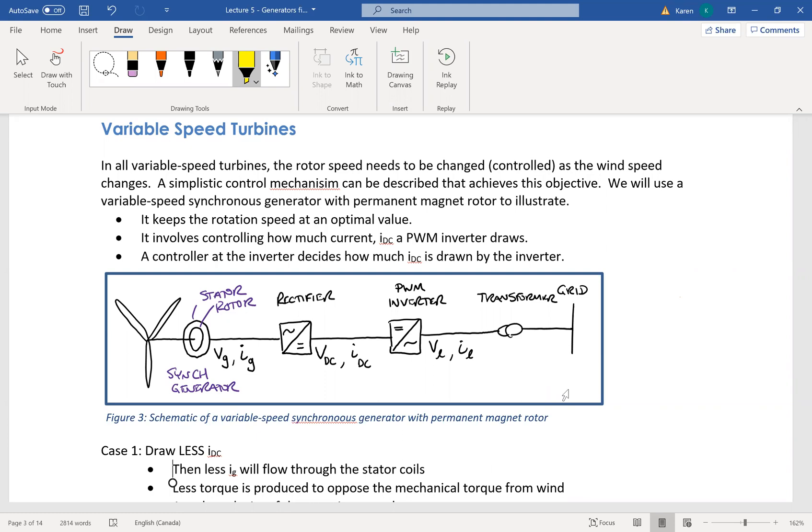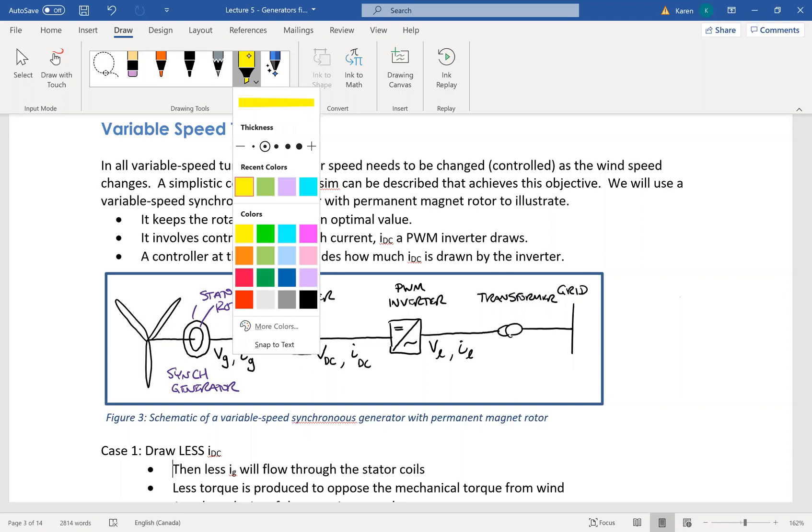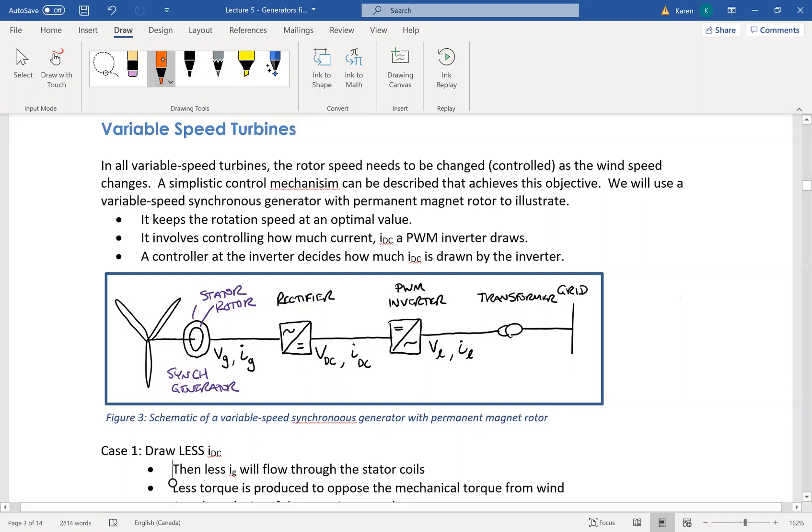So I want to look at a type of variable speed wind turbine called the variable speed synchronous generator. Now the synchronous generator is not the most common type of wind turbine used,